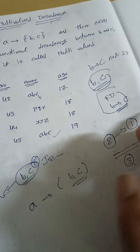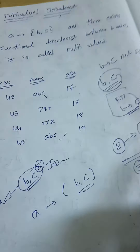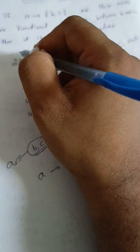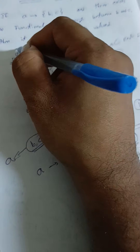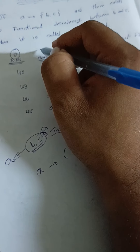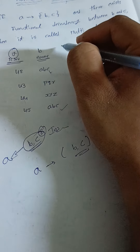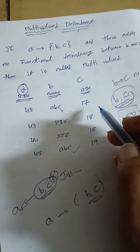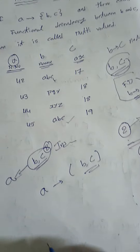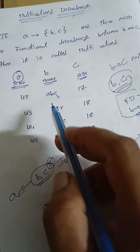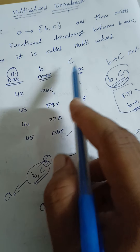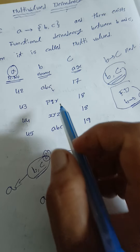Now we will see what is the meaning of multivalued dependency. So here we will assume this column as A, this as B, and this as C. With the help of A we will identify the B and C information.